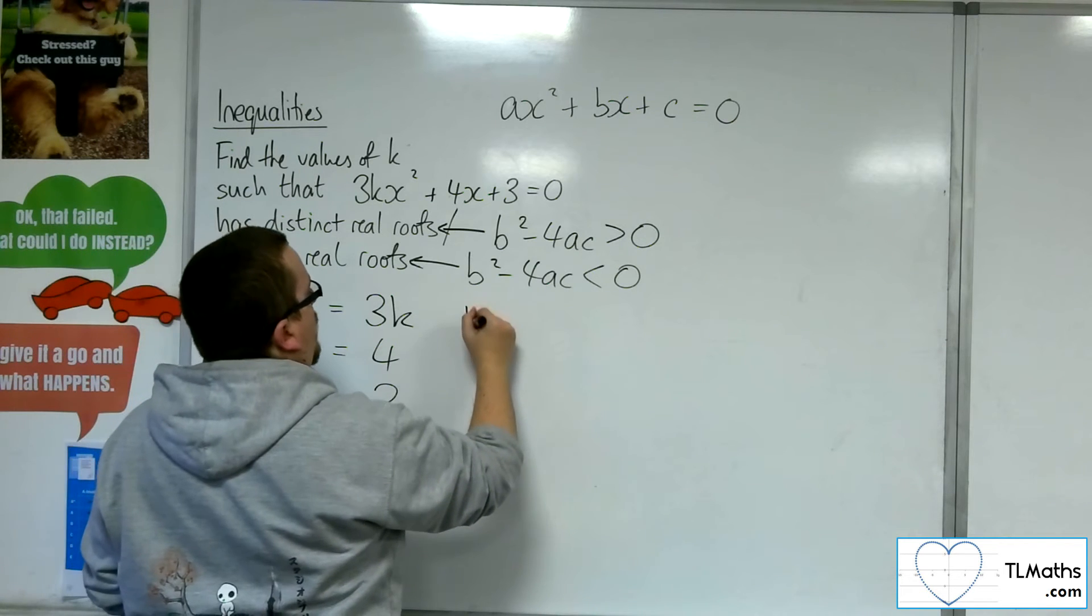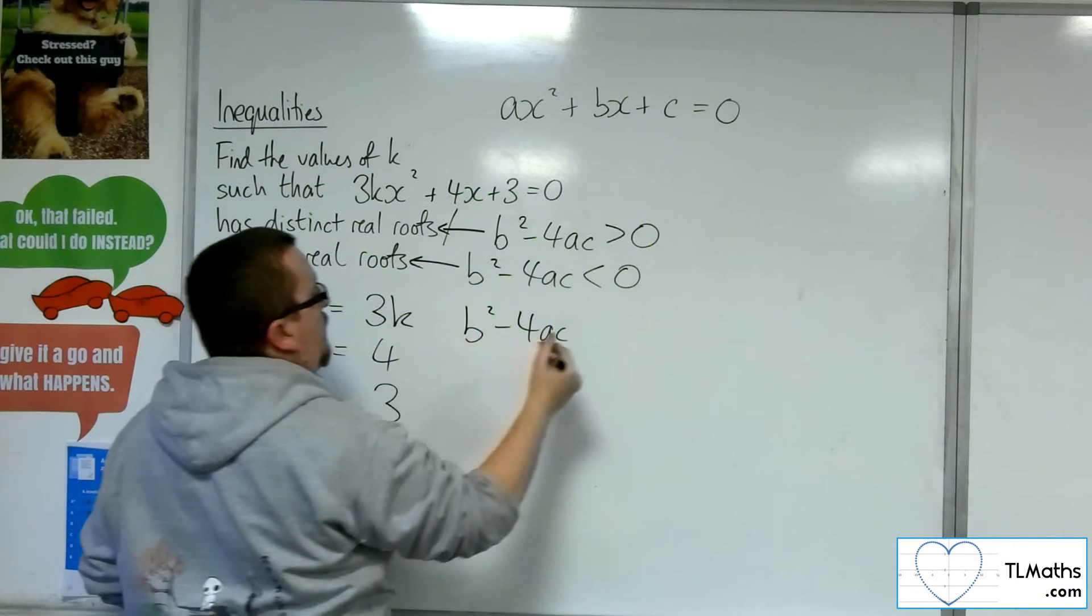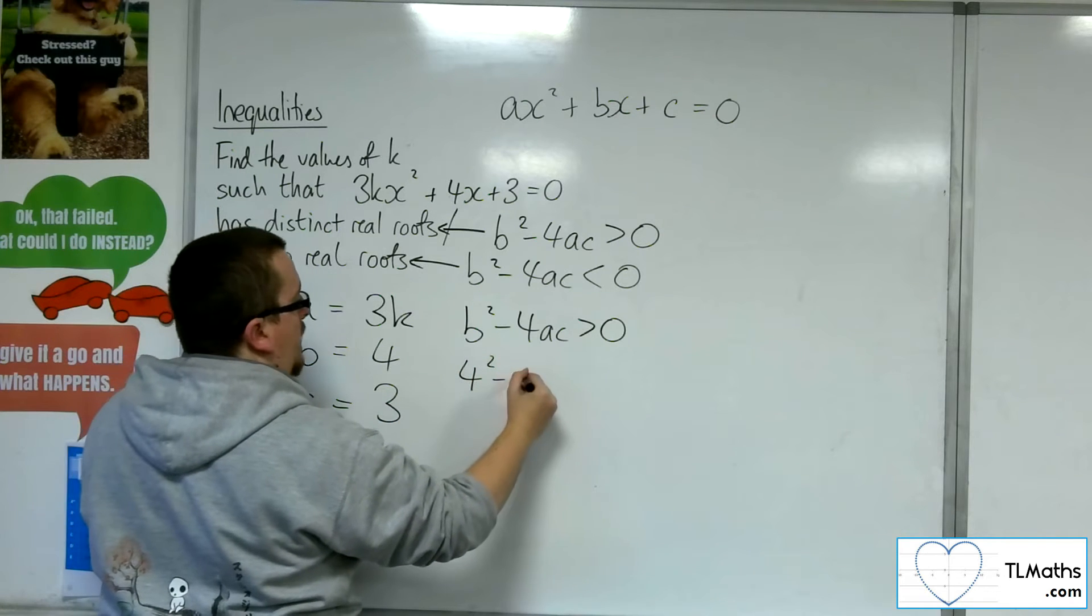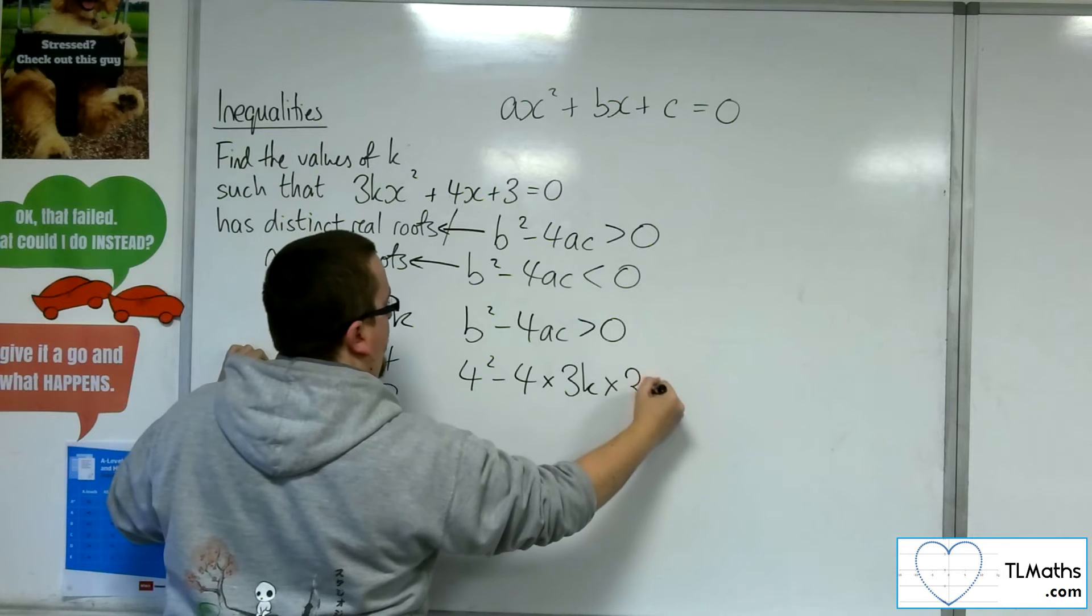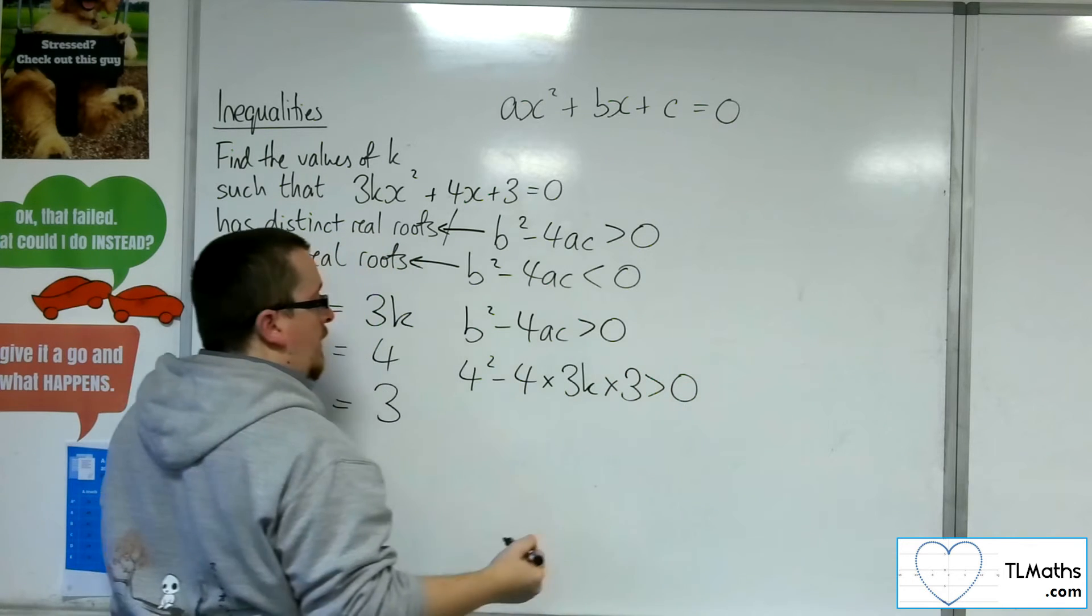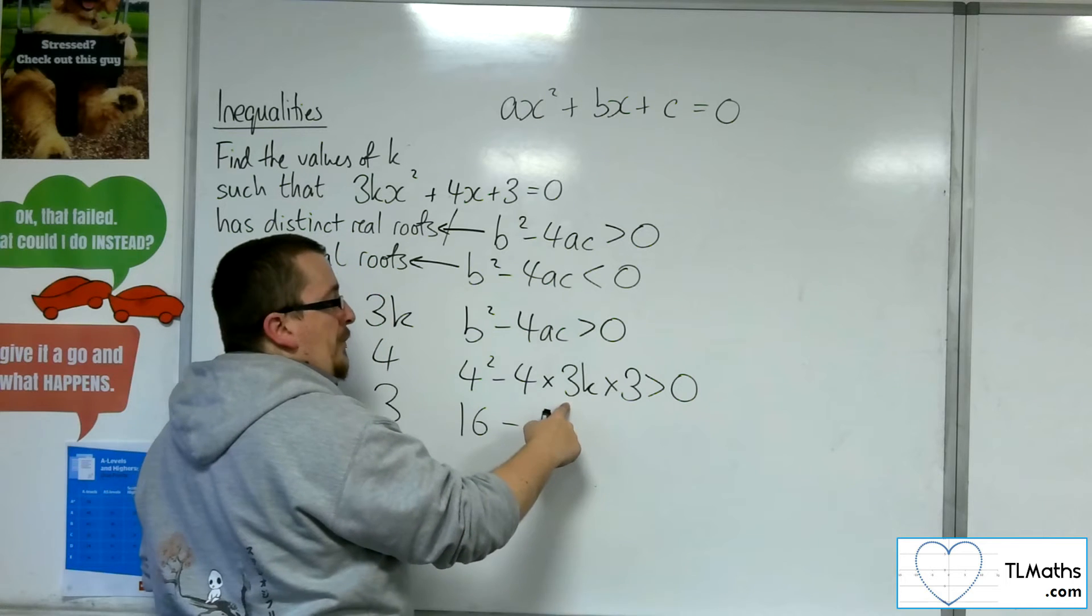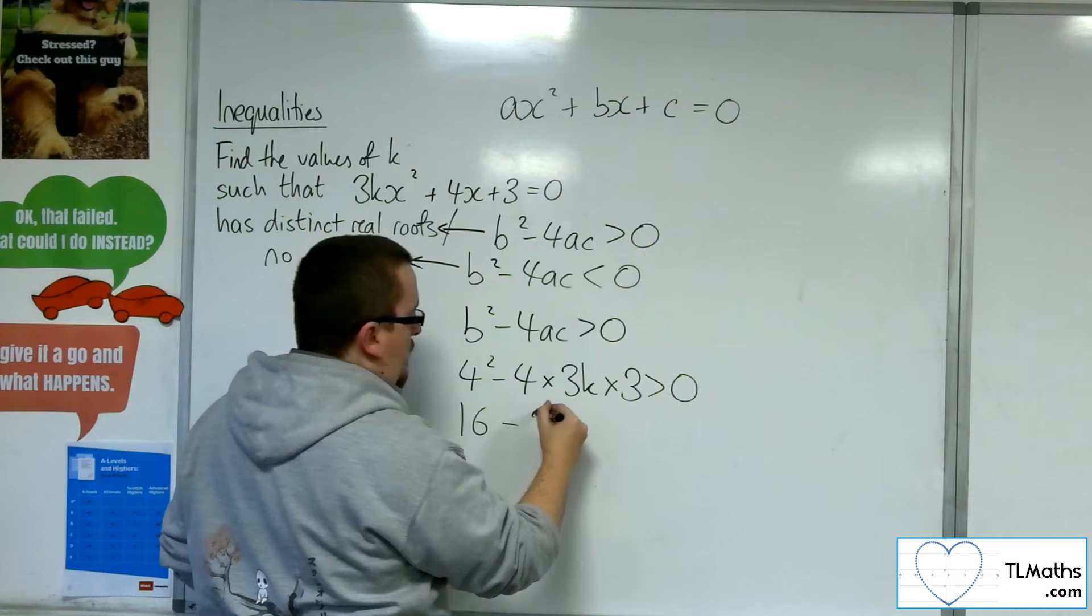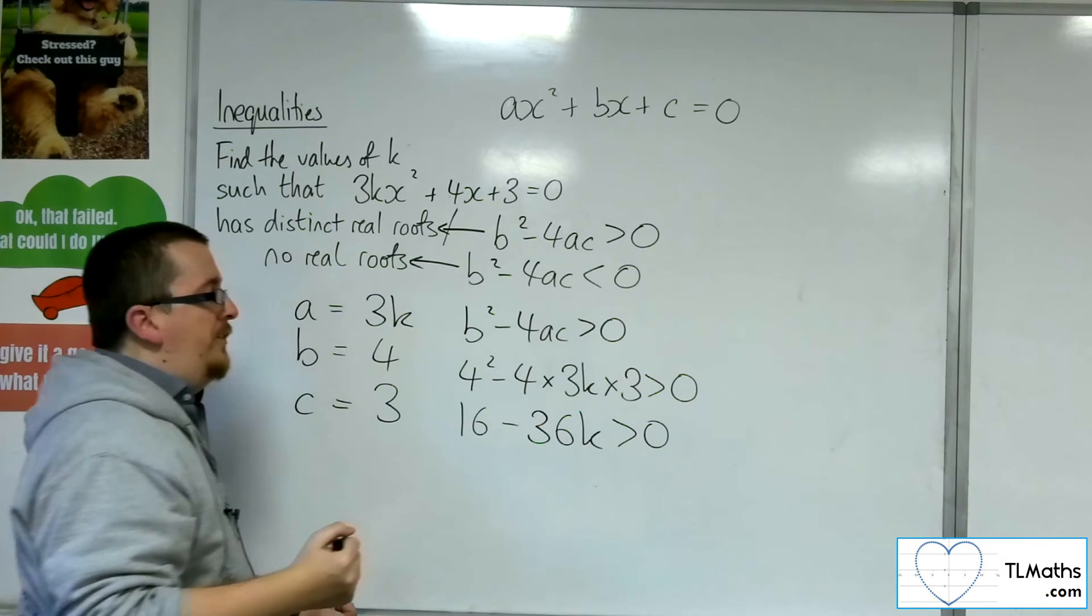So b squared minus 4ac, let's look at greater than 0 first, will be 4 squared, take away 4 lots of a, times c. So we're going to get 16, and then we've got 4 lots of 3 is 12, times 3 is 36, so 36k is greater than 0.